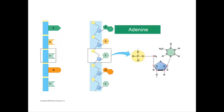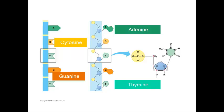A is for adenine, T is for thymine, C is for cytosine, and G is for guanine.